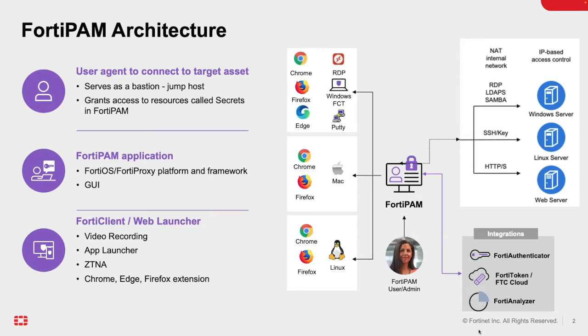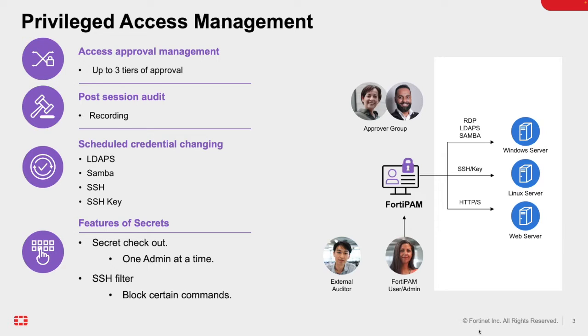Let's look at some privileged access management features. For access approval to secrets, up to three tiers of approval can be set up. That means that for a very important secret, you can have three different managers have to approve the access.